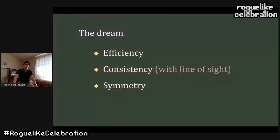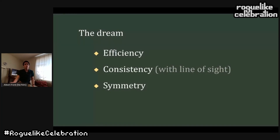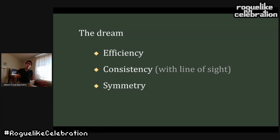Our dream in terms of vision is something that's efficient, consistent, and symmetric. Efficiency just means going fast. Consistency means you want field of view to play nicely with your other systems. If you have ranged combat in your roguelike, you want to avoid situations where you can see something and you can't target it, or you can target something that you can't see, or worst of all, something you can't see can target you. And then symmetry: if I can see you, you can see me and vice versa.